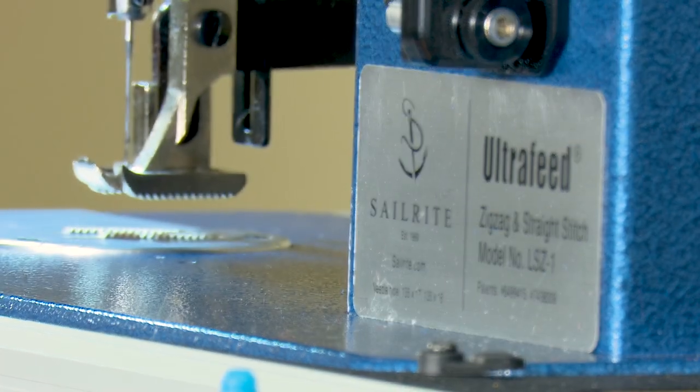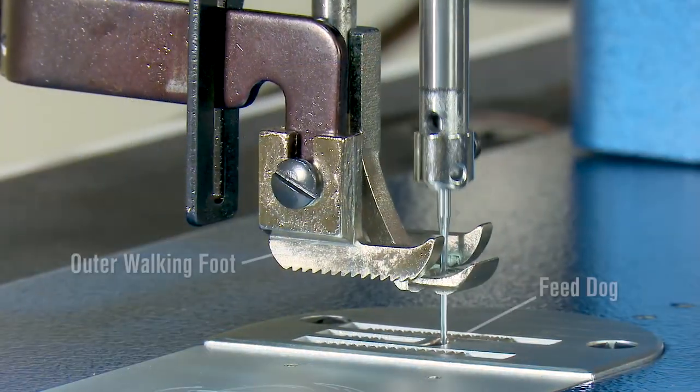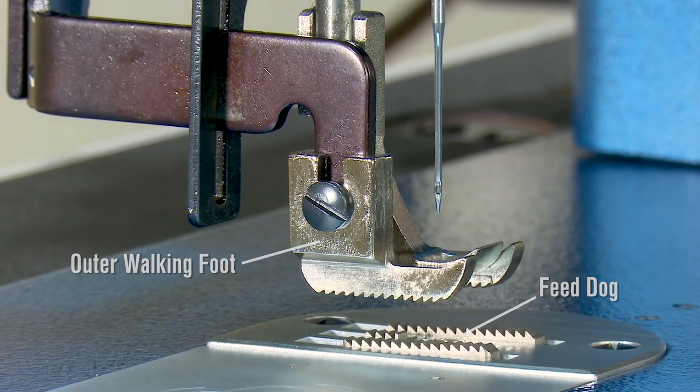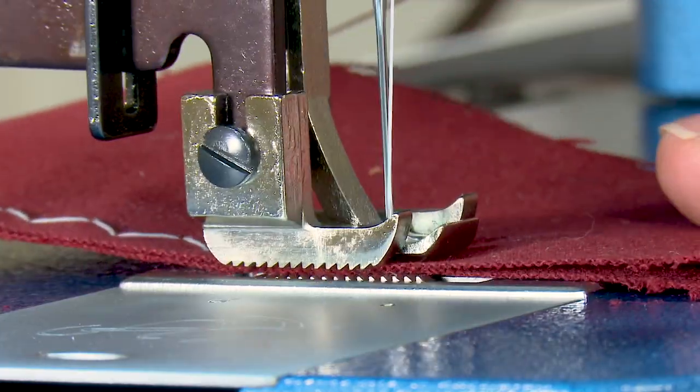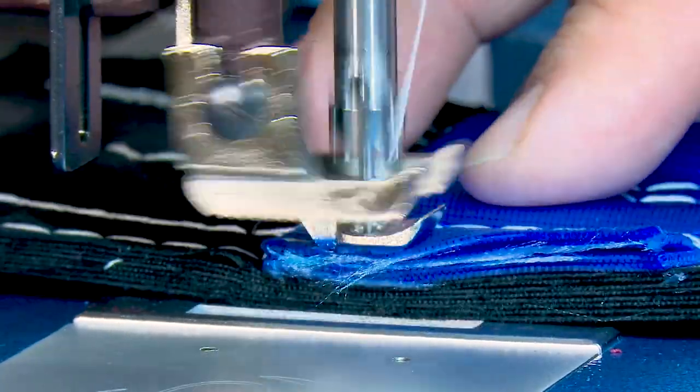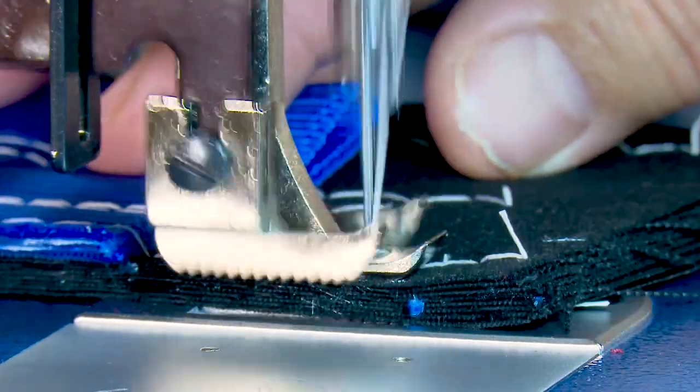The Ultrafeed sewing machines are famous for their mechanical walking foot which helps pull fabric assemblies consistently via an outer walking foot that works in conjunction with the feed dog. Working together they help feed fabrics at a constant rate, even over bumps.